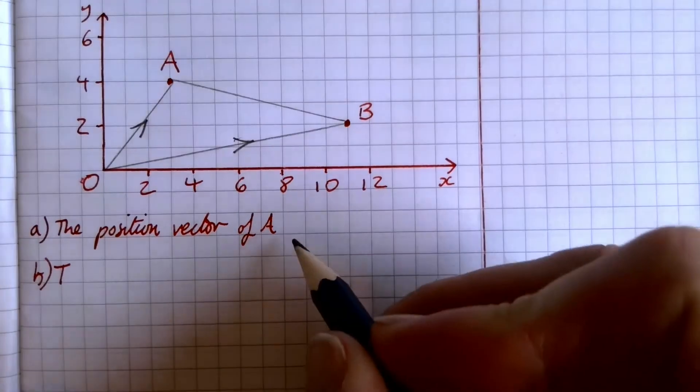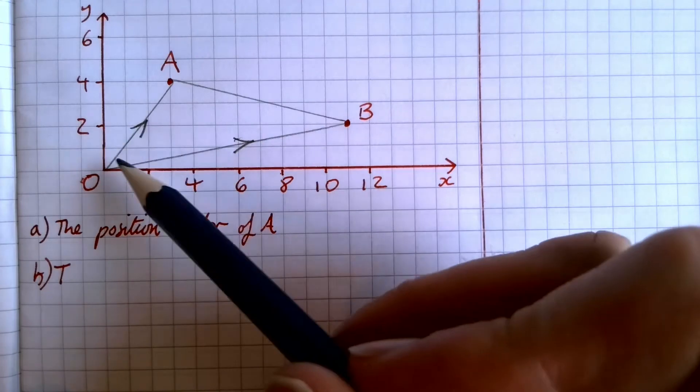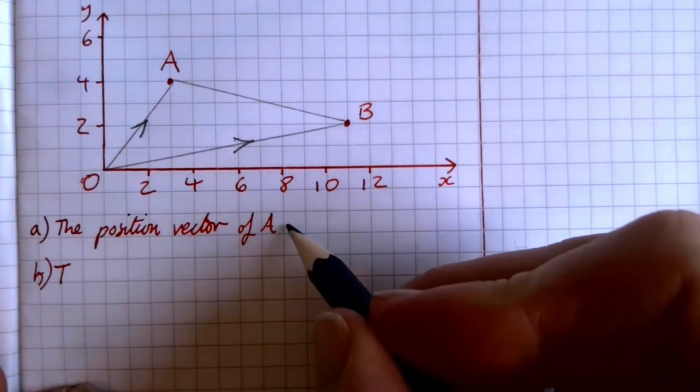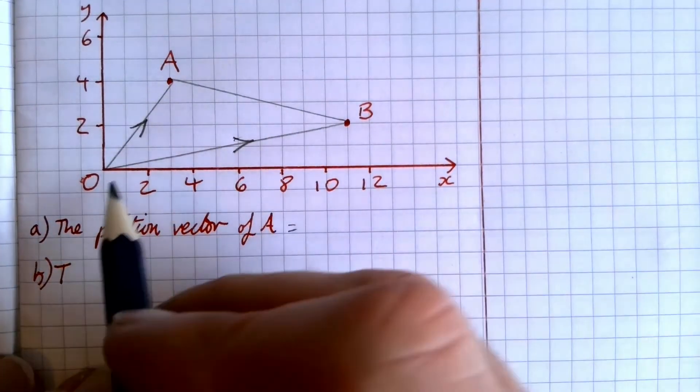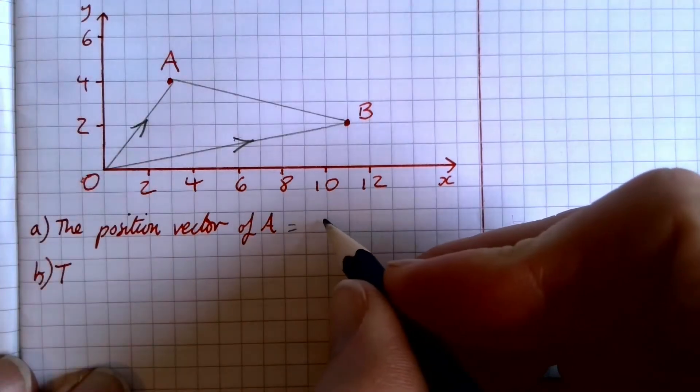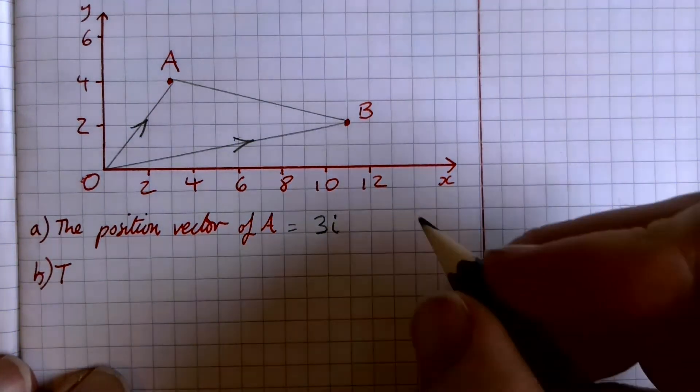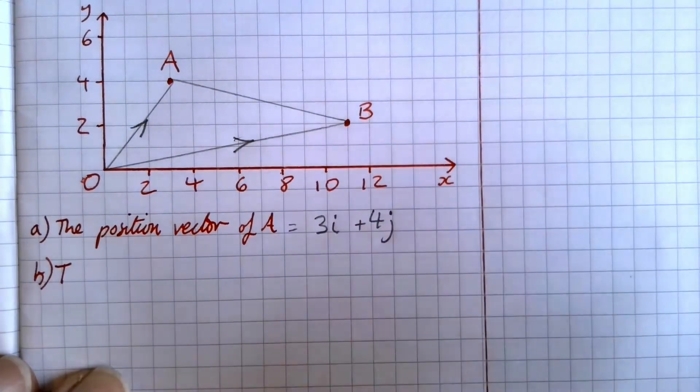OK, our first little question is, what is the position vector of A? Which just means, how do you get from the origin to A? Which means we're looking at the coordinates really, but using the language of mechanics, we're talking about it as a vector to I and a vector to J. So, it's 3i along the horizontal, and then that's going to be plus 4j up the vertical.